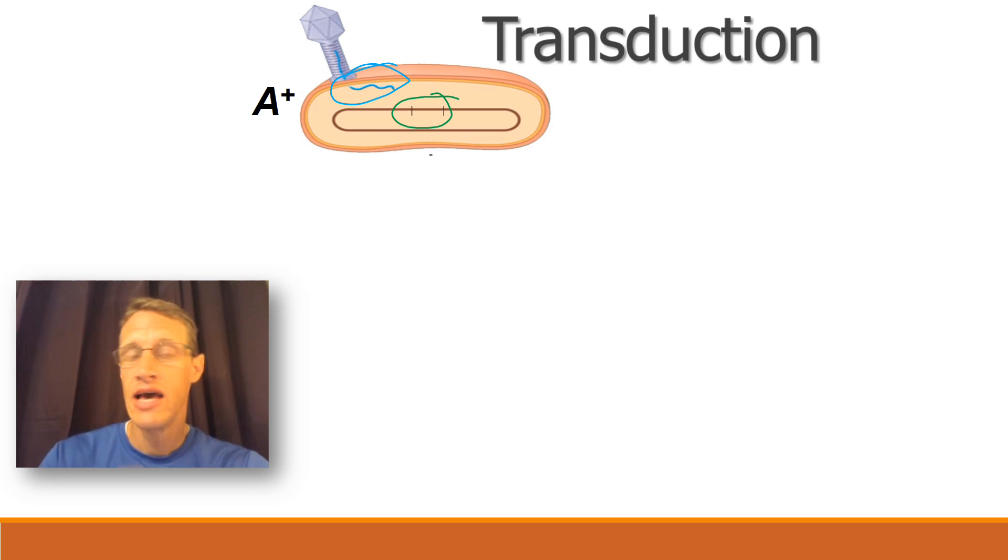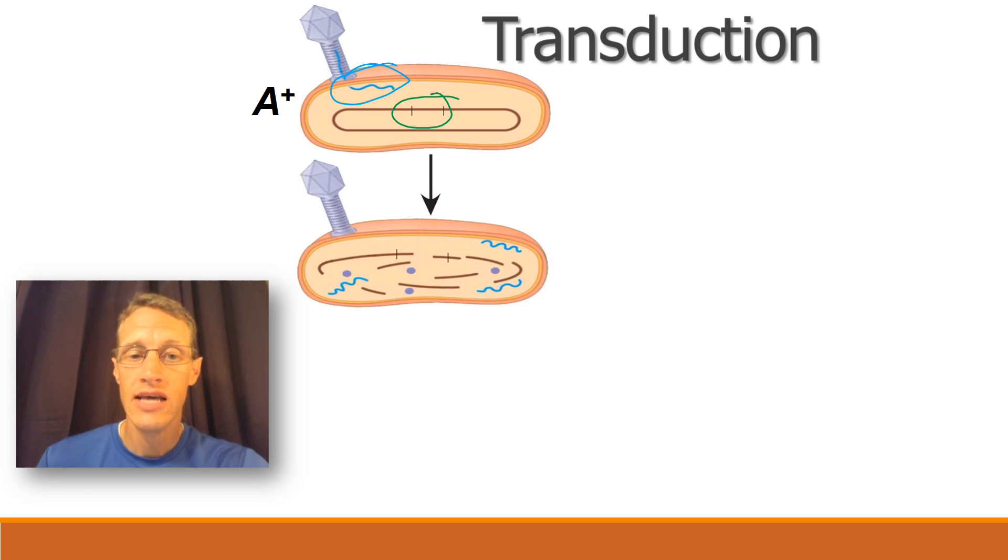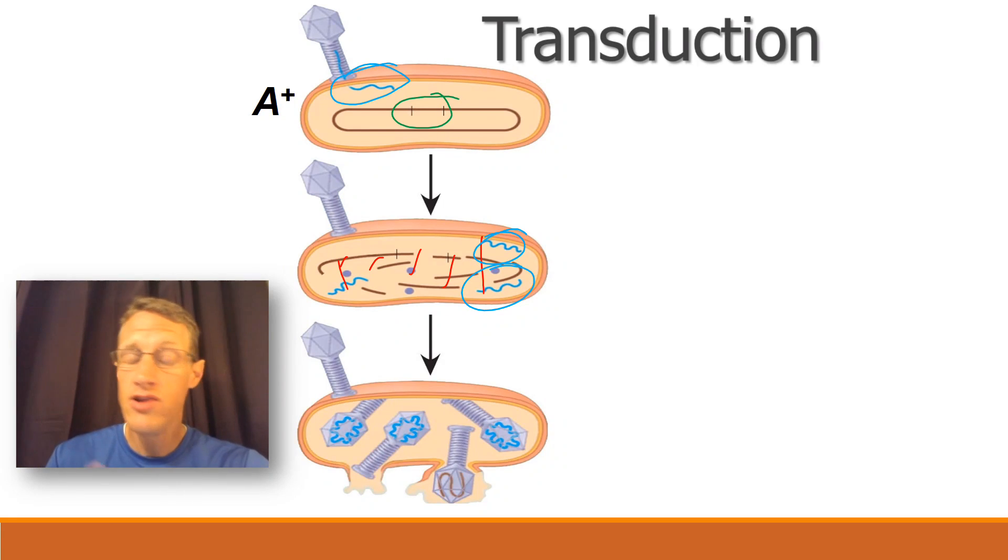It could be a gene that makes hair for the bacteria. It could give it the ability to eat a certain food. It could be anything. Now, as the virus injects its DNA into the host, it's going to kind of do some nasty business. It's going to chop up the host cell chromosome into little bits. Then it's going to make copies. You see copies of the viral DNA there. And it's then going to assemble a new army of viruses.